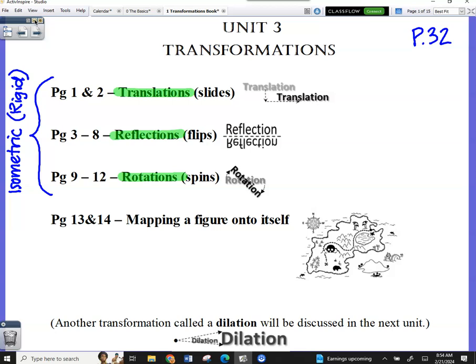You will notice that the only one that changes the size of it is dilation, which is down here at the bottom, and I even made a note. It's going to be discussed in the next unit. The ones we are going to practice right now, translate, reflect, rotate, are what's called isometric or rigid transformations. And that's because when I take the shape and I do this, the shape stays the same shape, same size.